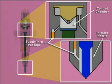At the injector, fuel flows through the supply inlet passage, pressurizing the injector nozzle and the control chamber above the injector plunger.